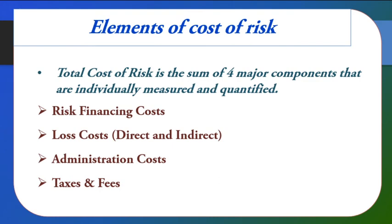Cost of risk is the expense you incur for reducing or controlling risk. You might have taken insurance or certain precautions — all those expenses are considered the cost of risk. The total cost of risk is the sum of four major components, individually measured and quantified. The first is risk financing cost — which might be insurance cost or precautionary activities taken. The second is loss cost, direct or indirect.